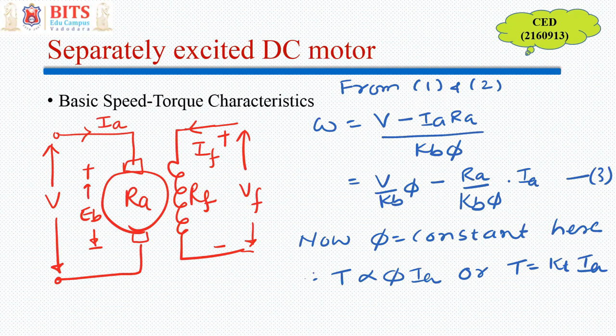Once again, if I replace IA using the torque relation, torque is proportional to flux into armature current. So torque equals KT times IA, because I assume flux is constant in this separately excited motor. Substituting this value, I get ω = V/(Kb·φ) - (RA/(Kb·φ))·(T/KT).